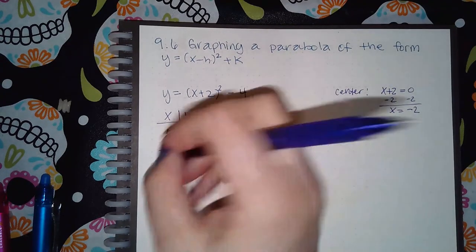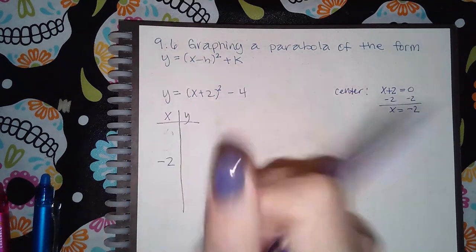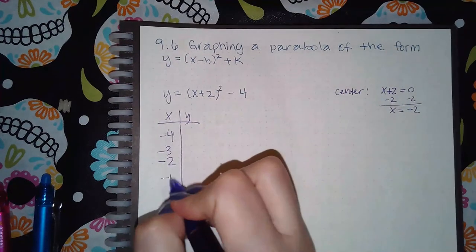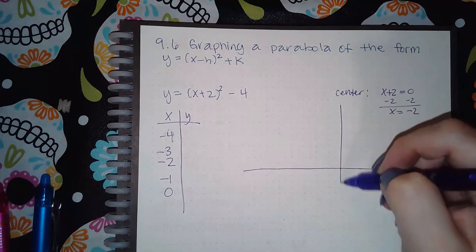Two values to the left of negative 2 would be negative 3 and negative 4, and then two values to the right would be negative 1 and 0. So we have negative 4, negative 3, negative 2, negative 1, and 0.